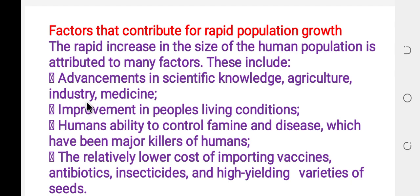Another factor is improvement in people's living conditions. Additionally, human ability to control famine, which has been a major killer of humans, contributes to rapid population growth.